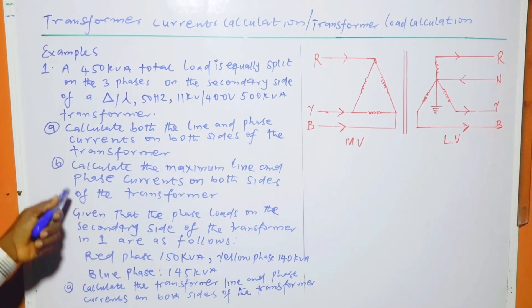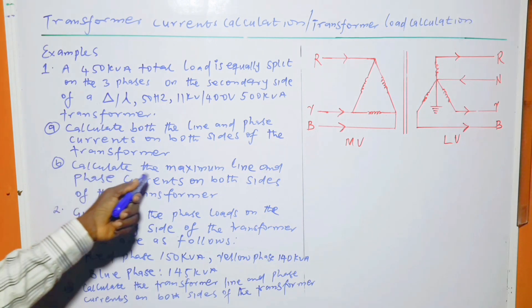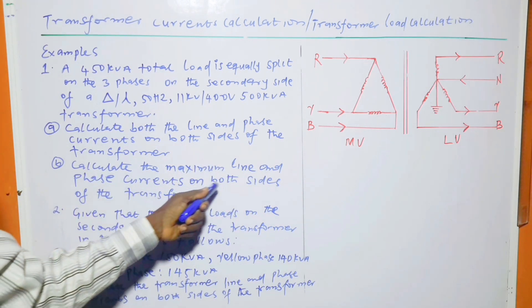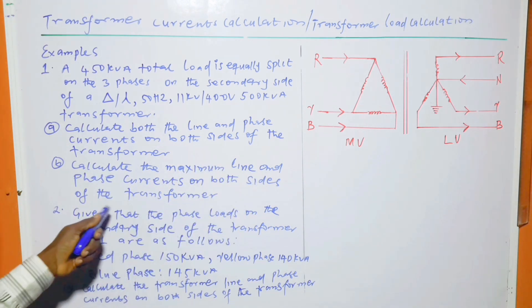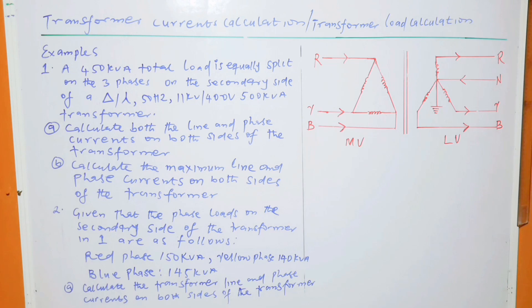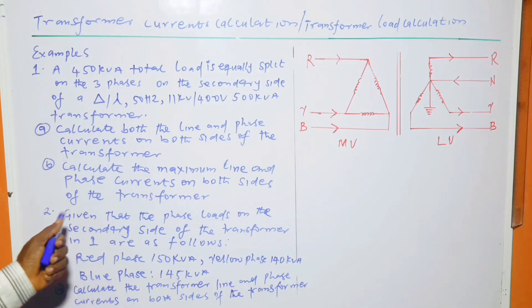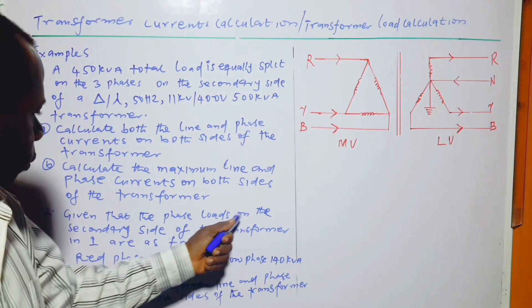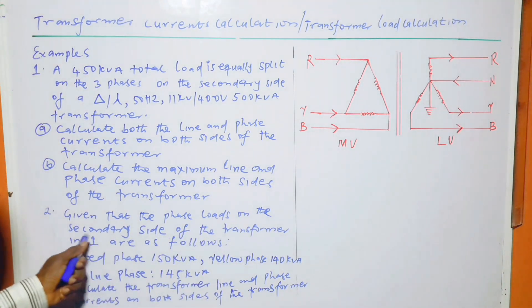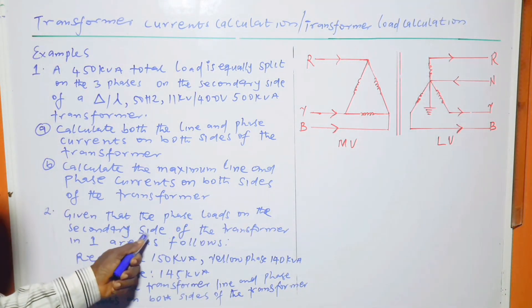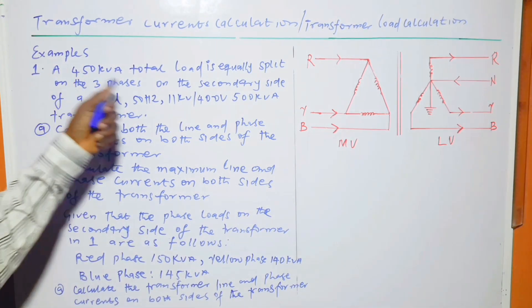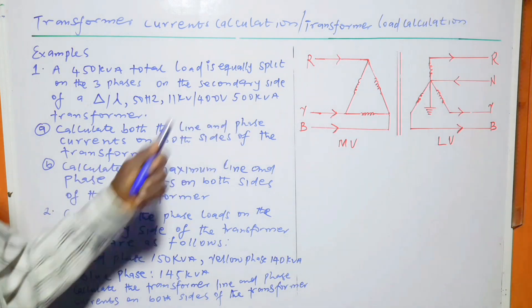The question asks: part (a) calculate both the line and phase currents on both sides of the transformer; part (b) calculate the maximum line and phase current on both sides of the transformer.